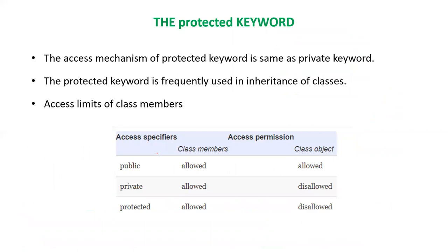Next comes the protected keyword. The access mechanism of the protected keyword is the same as the private keyword, but it is frequently used in inheritance of classes. Protected and inheritance are mainly used together. In summary: public access is allowed for both class members and class objects, while private restricts direct external access.